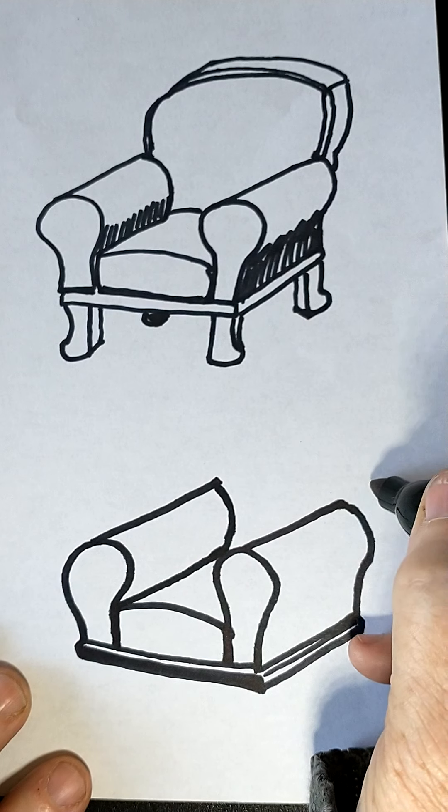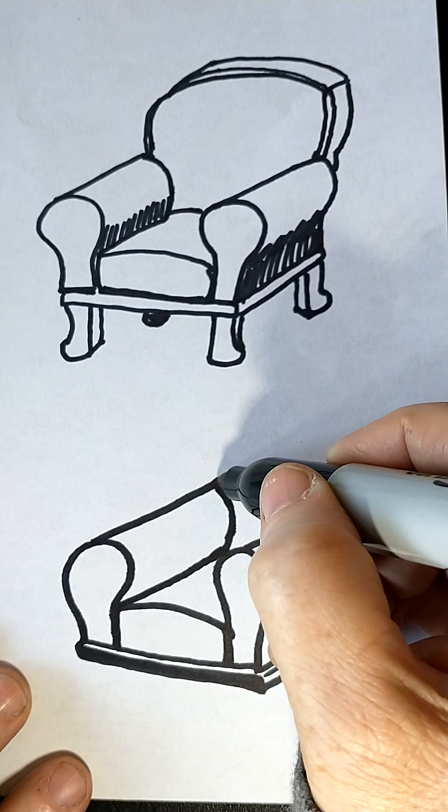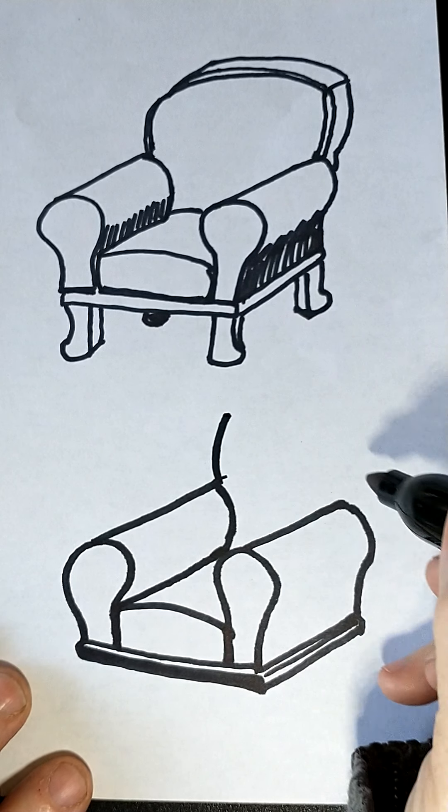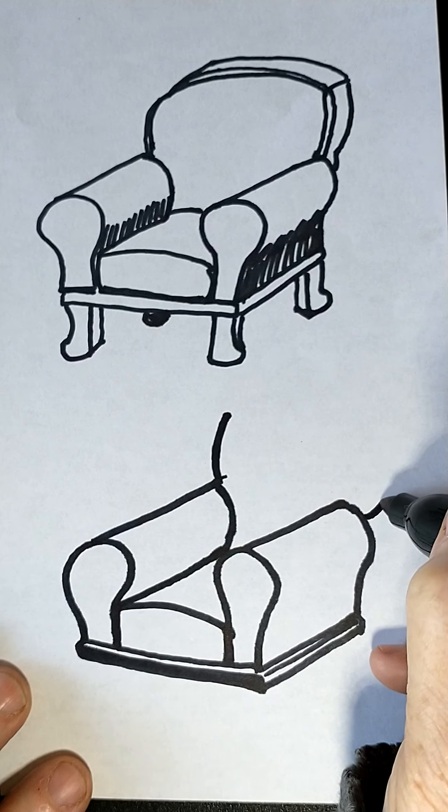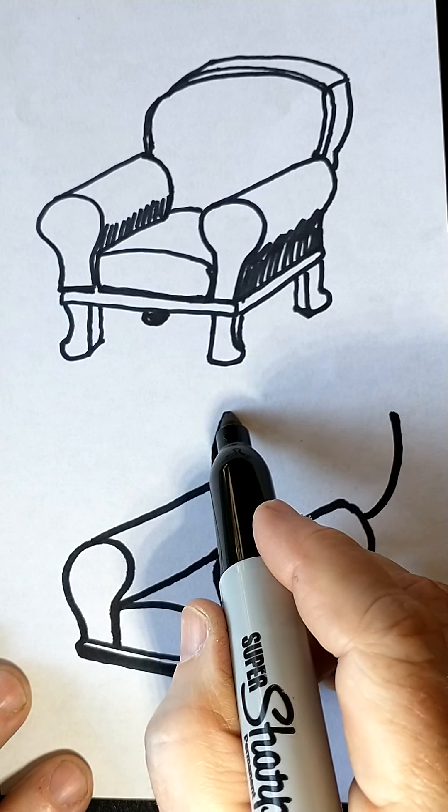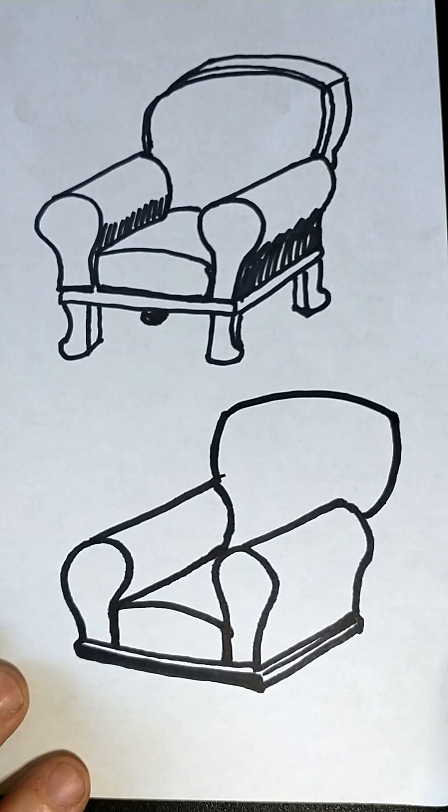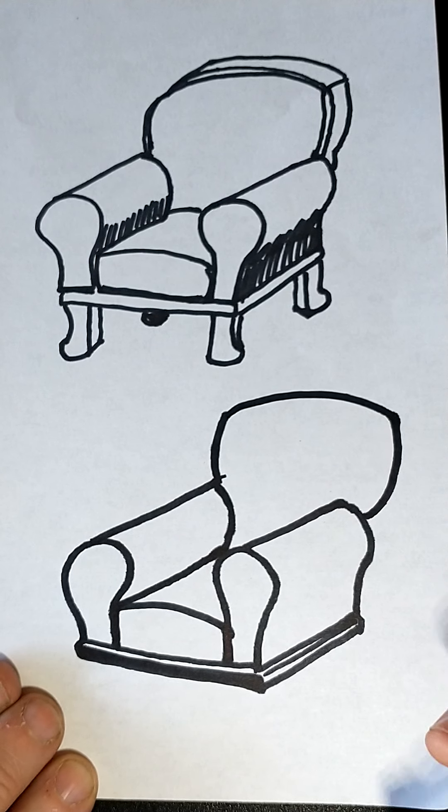And then the back of my chair comes out a little and it's gonna be over a little bit over here too. It comes over a little. And we'll go ahead and make it arc a little at the top too so it looks big and stuffed and comfortable.